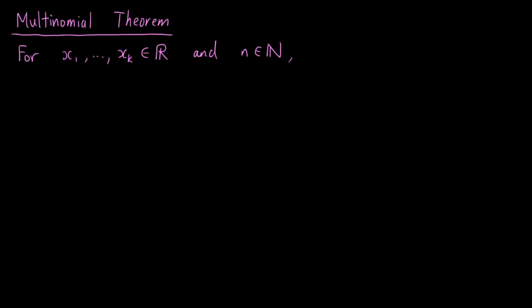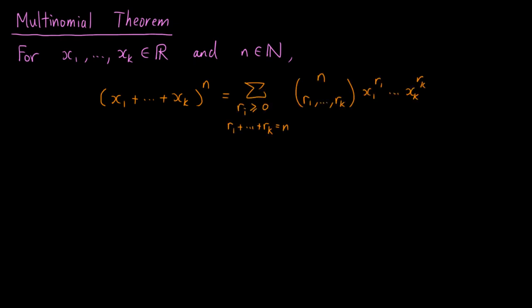Now let's introduce the multinomial theorem. It states that if we have real numbers x1 up to xk and a positive integer n, then the sum of x1 up to xk raised to the power n equals the sum of terms x1 to the R1 up to xk to the Rk, multiplied by the number of ordered partitions of subset sizes R1 up to Rk, where Ri is non-negative, the sum of R1 up to Rk equals N, and R1 up to Rk are integers from 0 up to N.